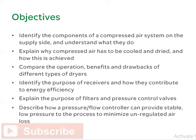At the completion of this course, you will be able to identify the components of a compressed air system on the supply side and understand what they do. Explain why compressed air has to be cooled and dried and how this is achieved. Compare the operation, benefits, and drawbacks of different types of dryers. Identify the purpose of receivers and how they contribute to energy efficiency. Explain the purpose of filters and pressure control valves. And describe how a pressure flow controller can provide stable, low pressure to the process to minimize unregulated air loss.